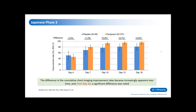The difference in cumulative chest imaging improvement rates became increasingly apparent over the clinical course. On days four and seven there was no statistically significant difference, but real changes were noted after the day-10 mark. Analysis on days 13 and 16 also showed a significant difference between the favipiravir arm and the placebo arm.